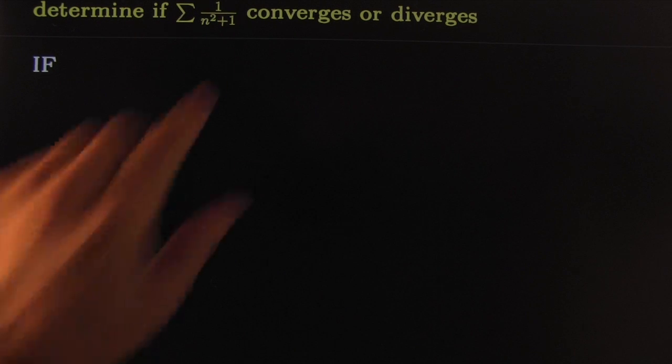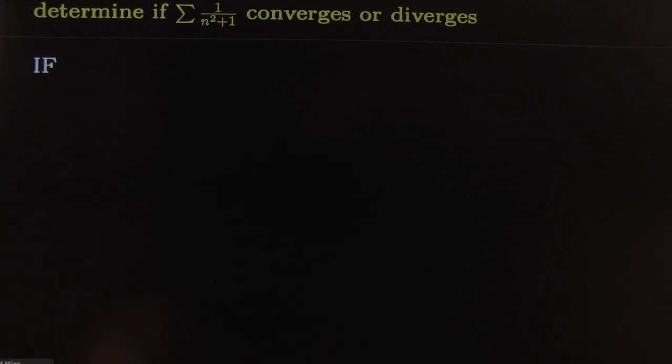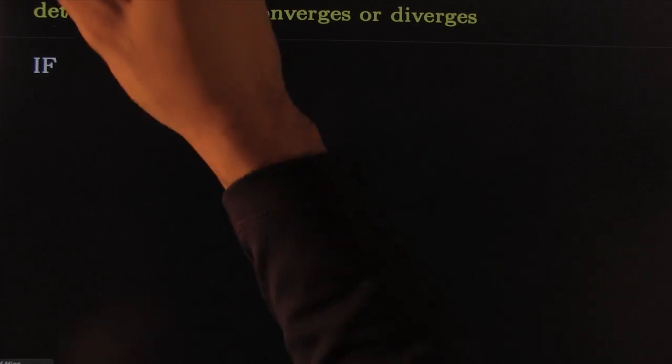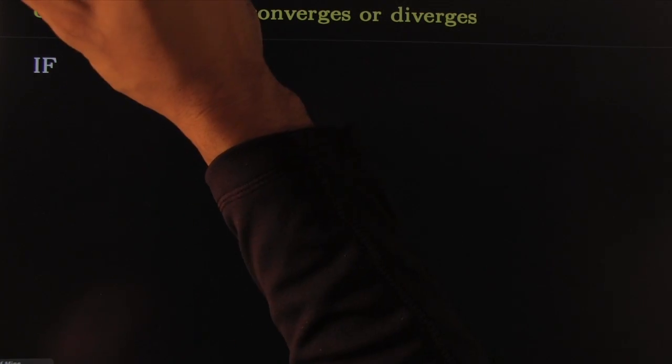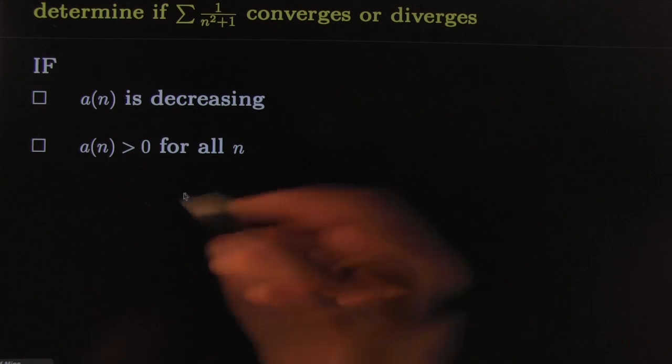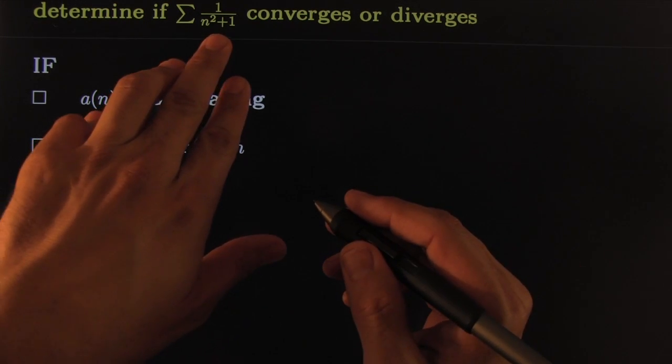How about this one right here: 1 over n squared plus n. We're trying to practice our integral test. The way we do it is we check the conditions. If I can show that it's decreasing and I can show that it's positive, then it behaves the same as the integral version of it.